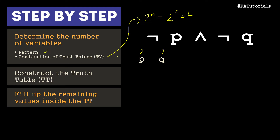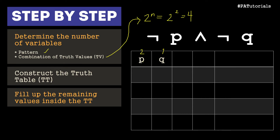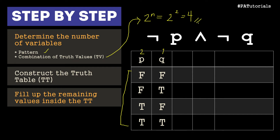We proceed to the second step: construct the truth table. Since P has a pattern of 2, that's two false and two true. Q has a pattern of 1, so alternating false, true, false, true — giving us 4 combinations of truth values. Now we need to fill up the remaining values, starting from simple to complex expressions: not P, then not Q, then not P and not Q.